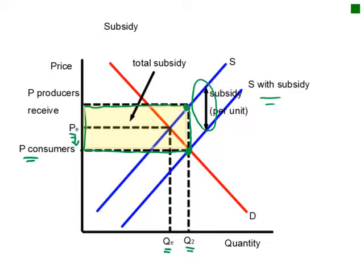Here is the graph: the original equilibrium price and quantity are shown, the supply curve has shifted down by the amount of the subsidy, and the new equilibrium is at the intersection with the demand curve. We create the total subsidy rectangular box by going up to the new supply curve. The farmer is paid in two goes: from consumers at the new lower price PC at quantity Q2, and then receiving a check from the government for the total subsidy — the yellow box — perhaps a month later.